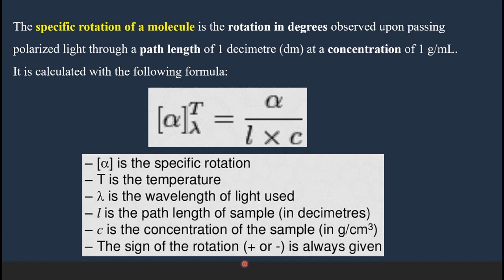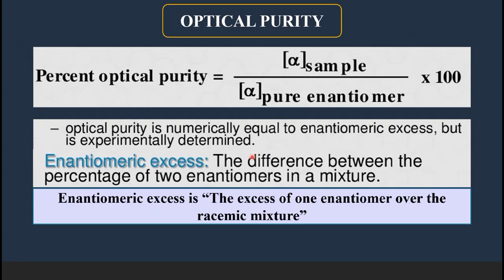Specific rotation always should have a sign: plus for clockwise rotation and minus for anti-clockwise rotation. Now, if you are given a mixture of enantiomers, how will you find out the enantiomeric excess or optical purity? That we shall discuss now.